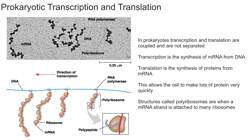Translation is the synthesis of proteins from the mRNA. The ribosomes are these little brown hamburger-looking buns, and they bind to the mRNA in order to create proteins. The polypeptide, which makes up a protein, is formed by the ribosome. Another term that comes up often is polyribosome — by definition, it is when one mRNA strand is attached to two or more ribosomes.